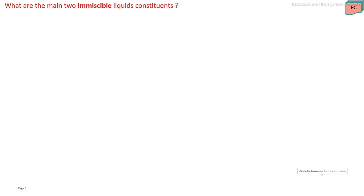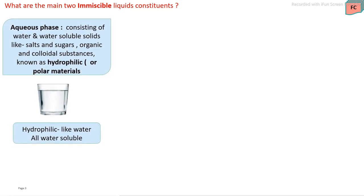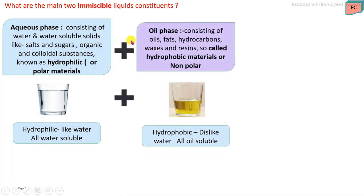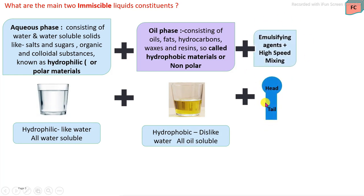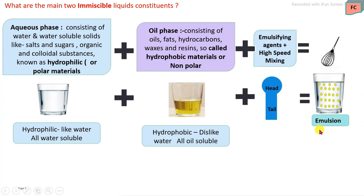The main constituents present in immiscible liquid solutions are: first, water and water-soluble constituents, called the aqueous phase or materials, which include salt, sugar, and organic and colloidal substances that easily mix into water. Second, oil and oil-soluble constituents that easily dissolve into oils are called hydrophobic materials. These two phases are mixed with the addition of emulsifying agents and high-speed mixing or homogenization, resulting in a homogeneous final product — the formation of the emulsion.